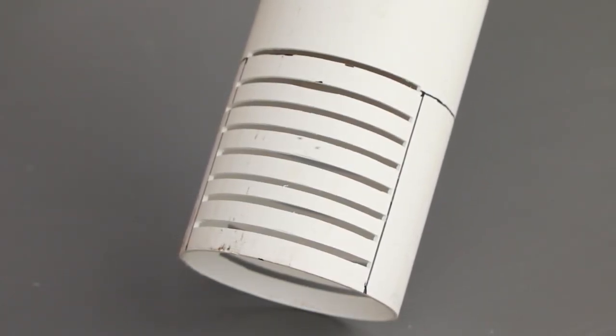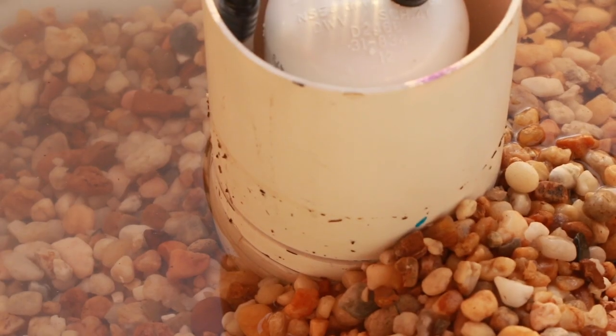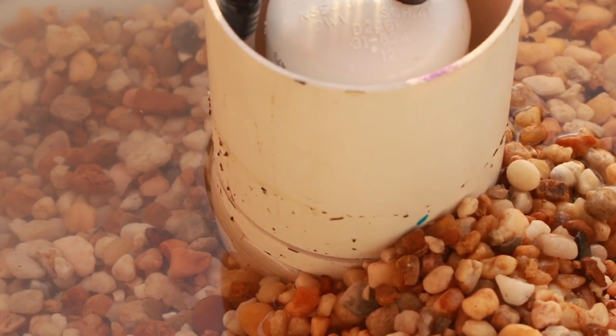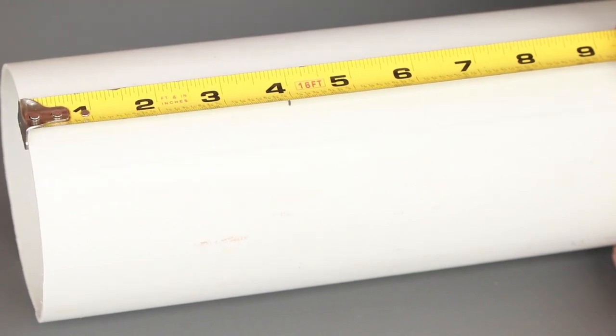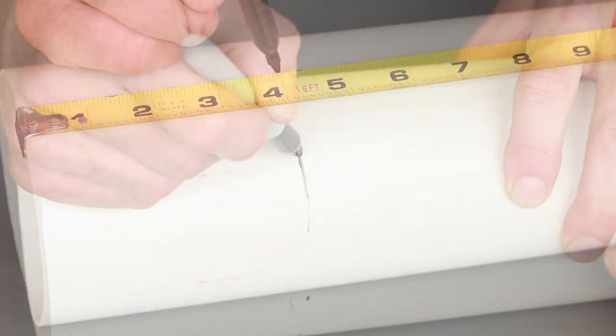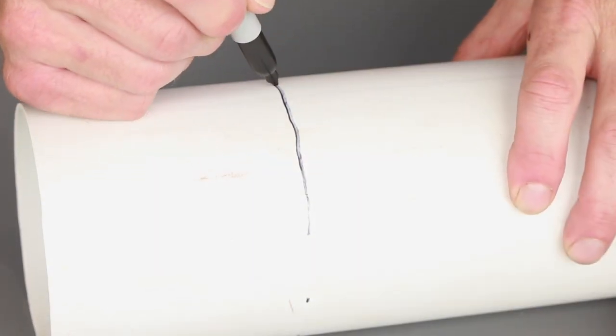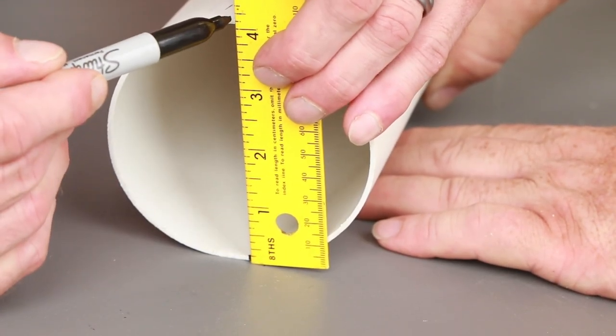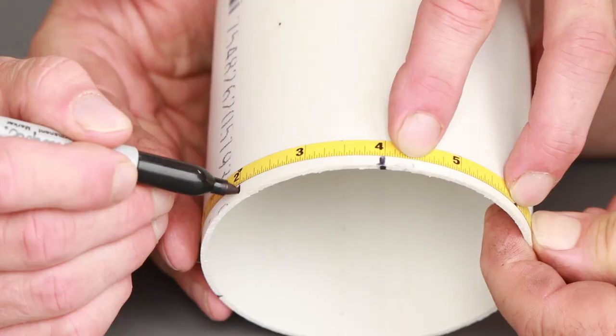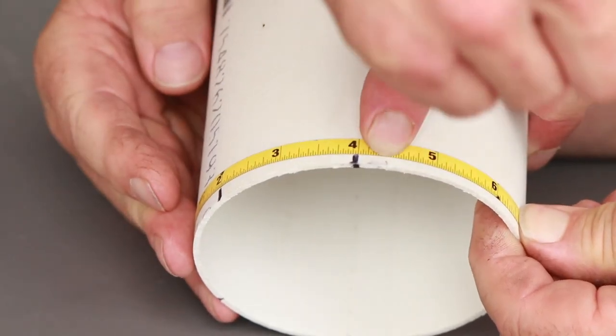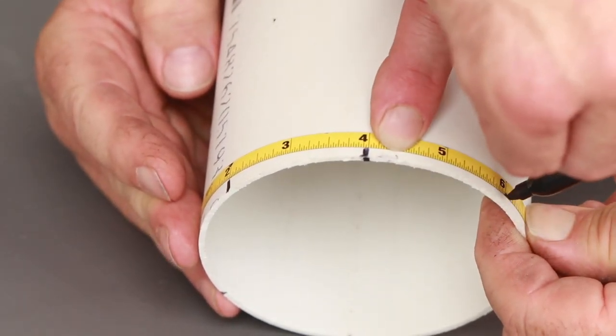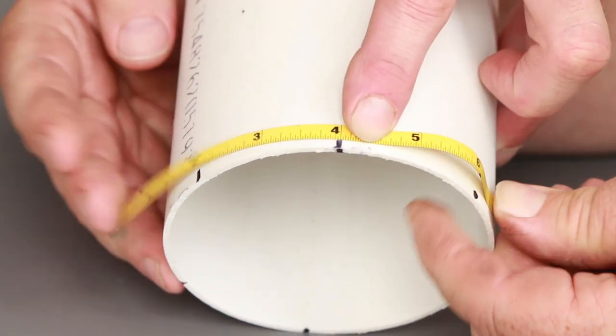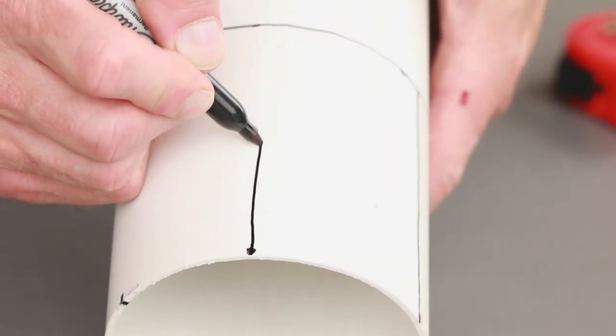The slits will allow water to pass through the protective sleeve so it can get to the overflow pipe. Measure 4 inches up from one end of the pipe and draw a line around the pipe. Place a straight edge across the widest diameter of the pipe and make a mark on either side. Measure 2 inches on either side of the initial marks and draw a line from the bottom of the pipe up to the 4-inch marker.